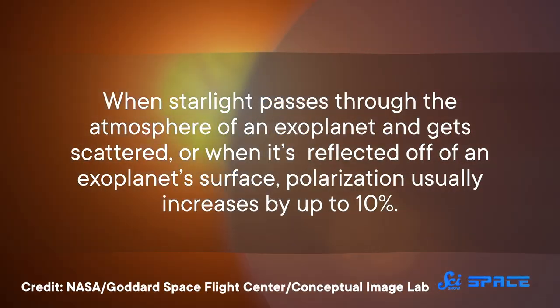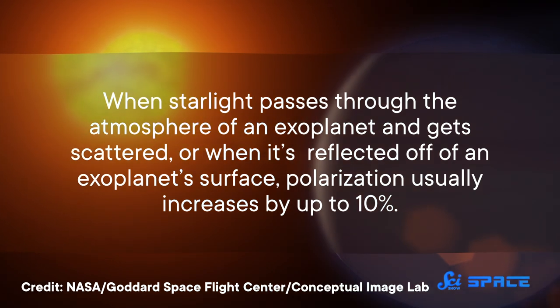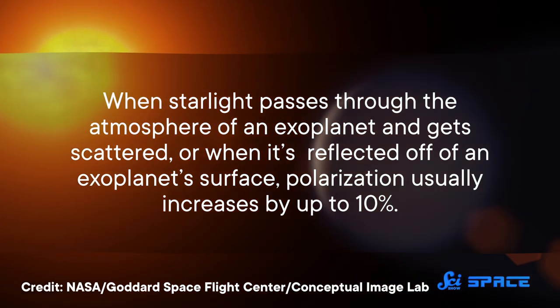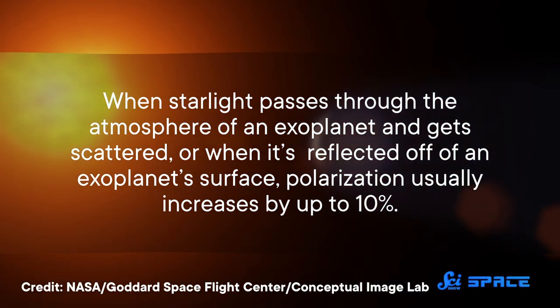When starlight passes through the atmosphere of an exoplanet and gets scattered, or when it's reflected off of an exoplanet's surface, polarization usually increases by up to 10%. And on some planets, light could have to pass through clouds in the atmosphere. Polarization data can help researchers identify clouds, because they block an exoplanet's polarized light from reaching the camera. And if it's a lucky exoplanet, clouds can even be characterized by the presence of rainbows.